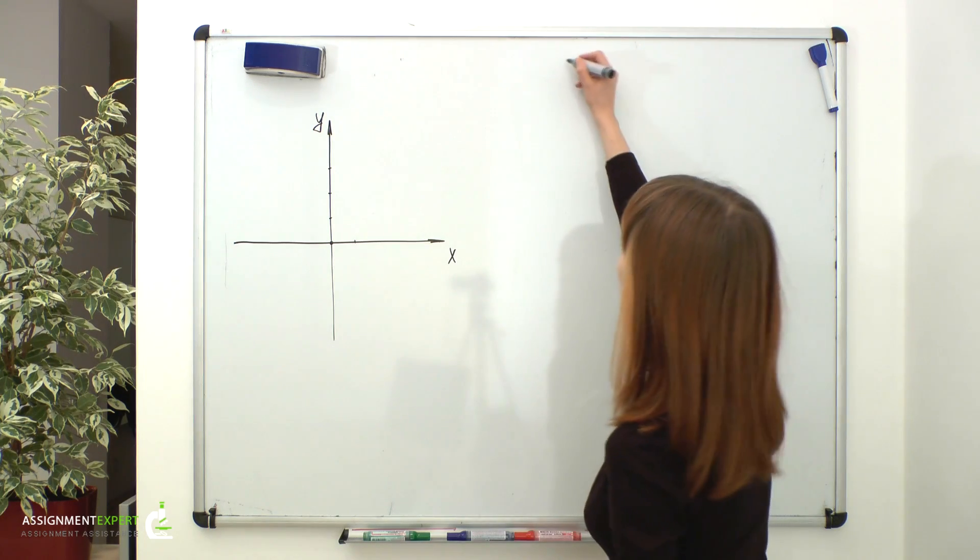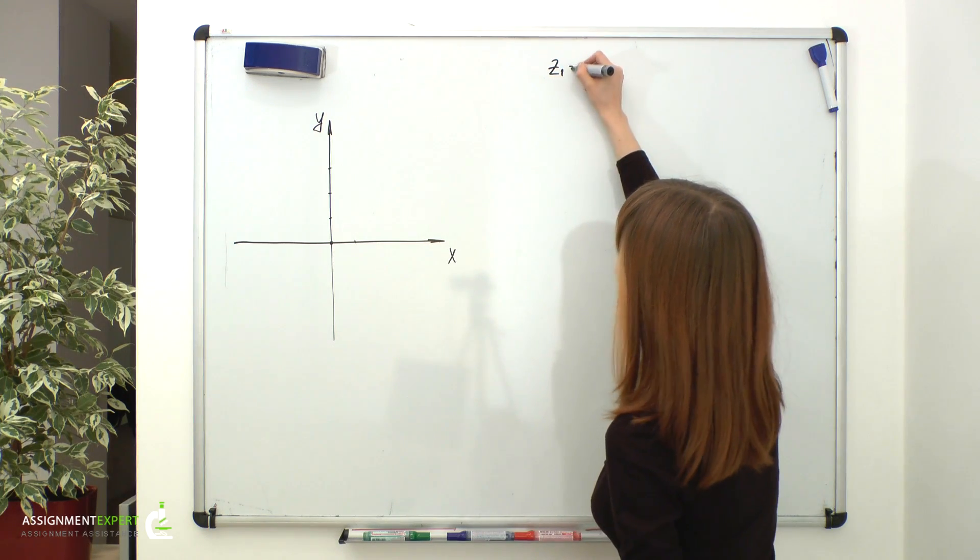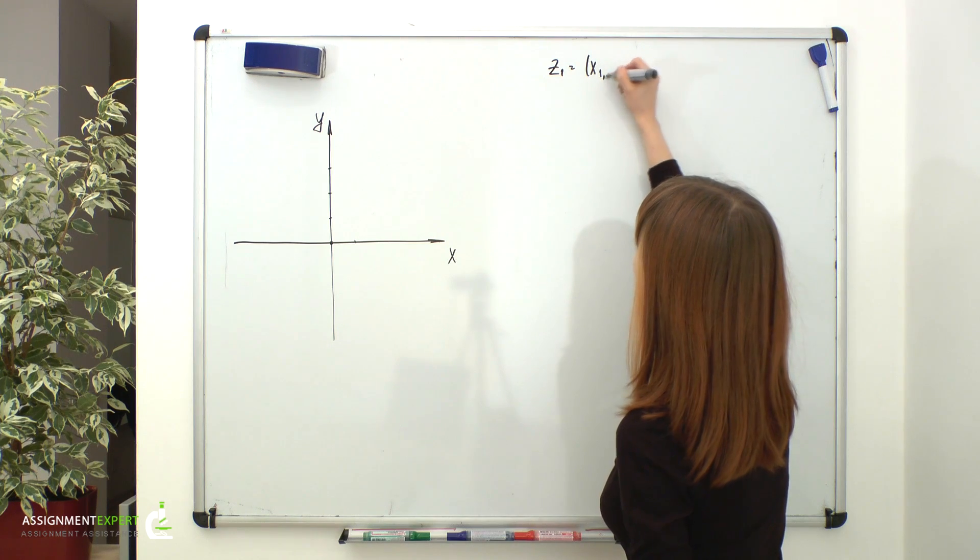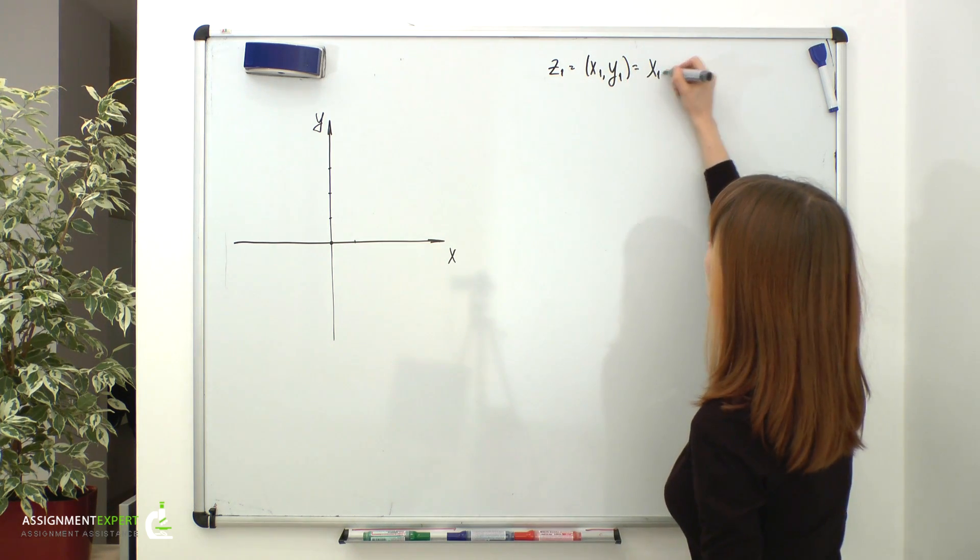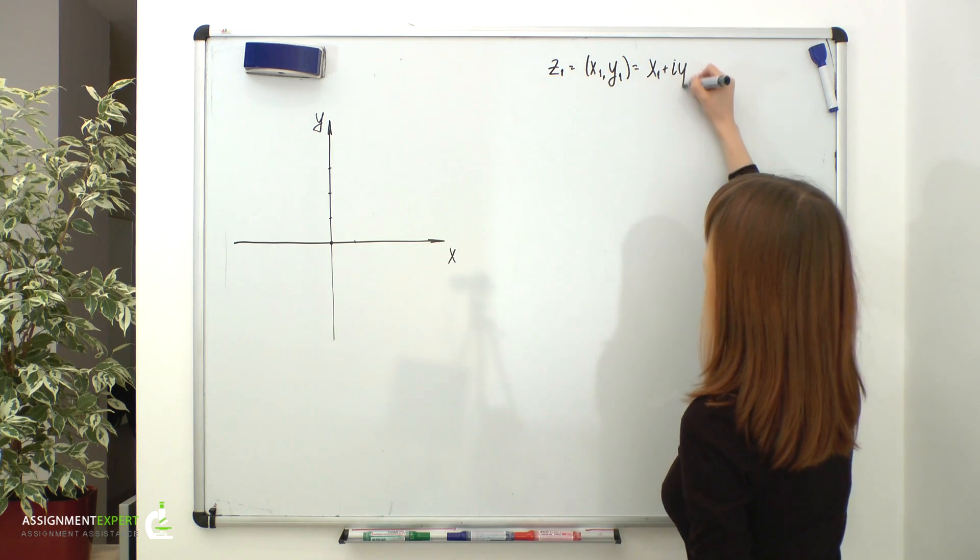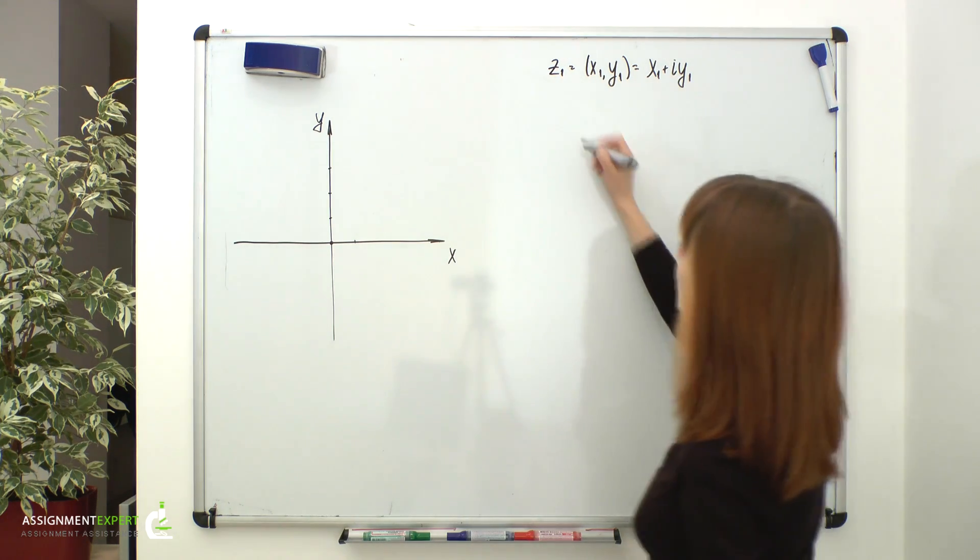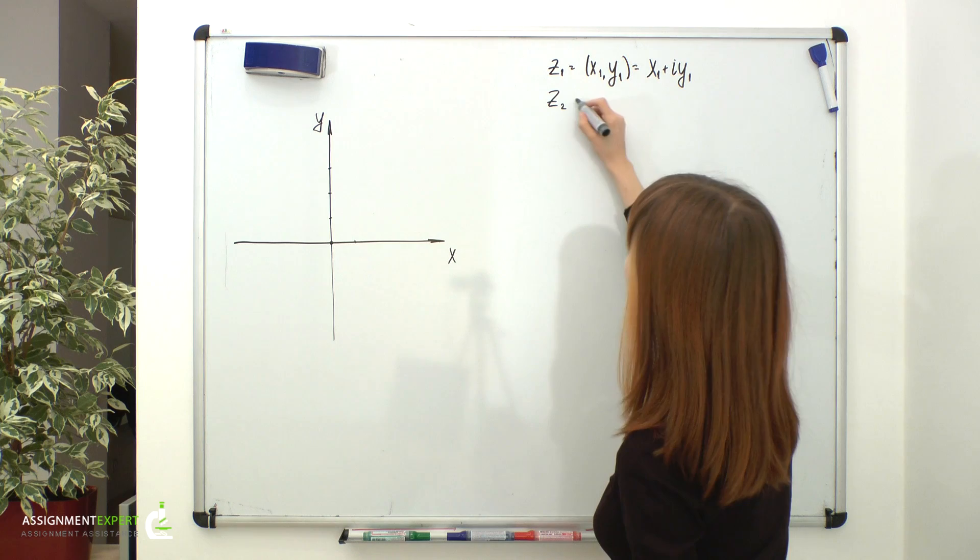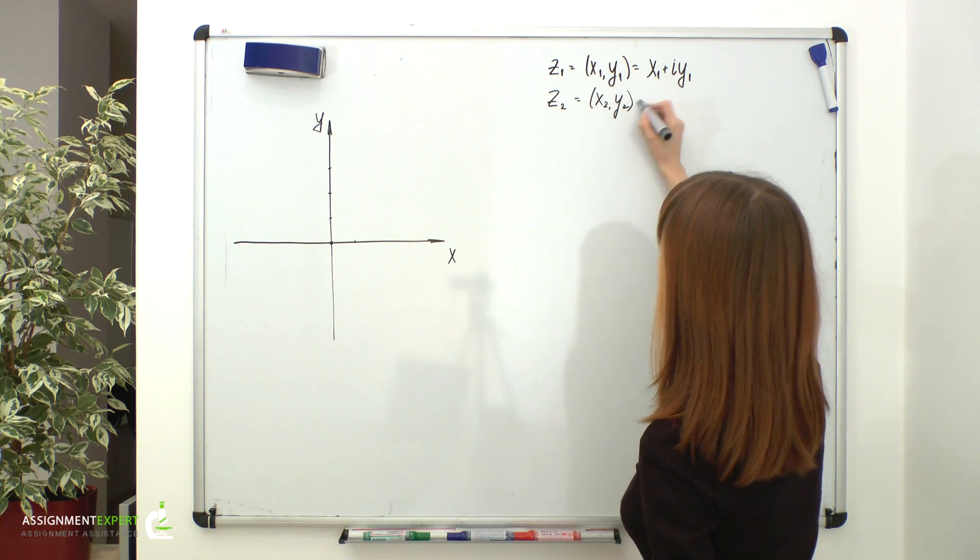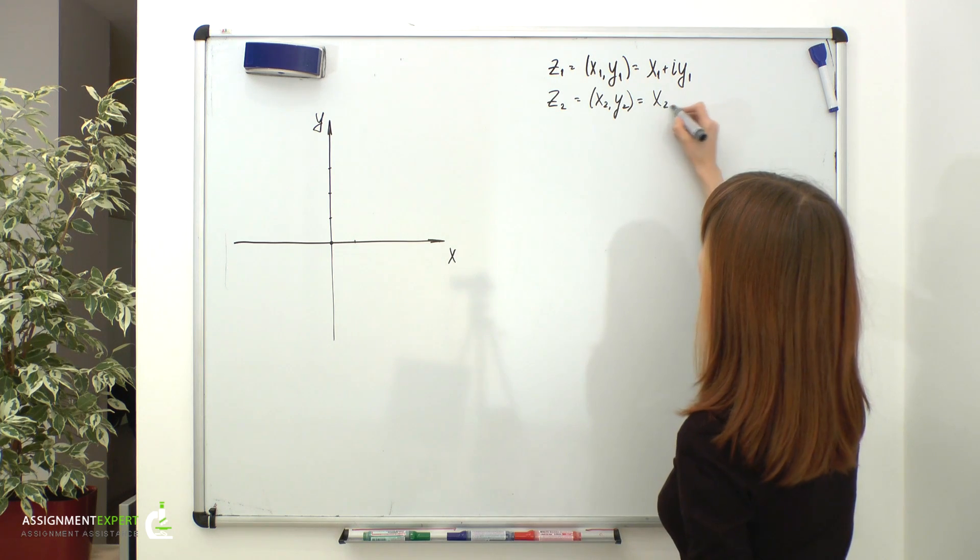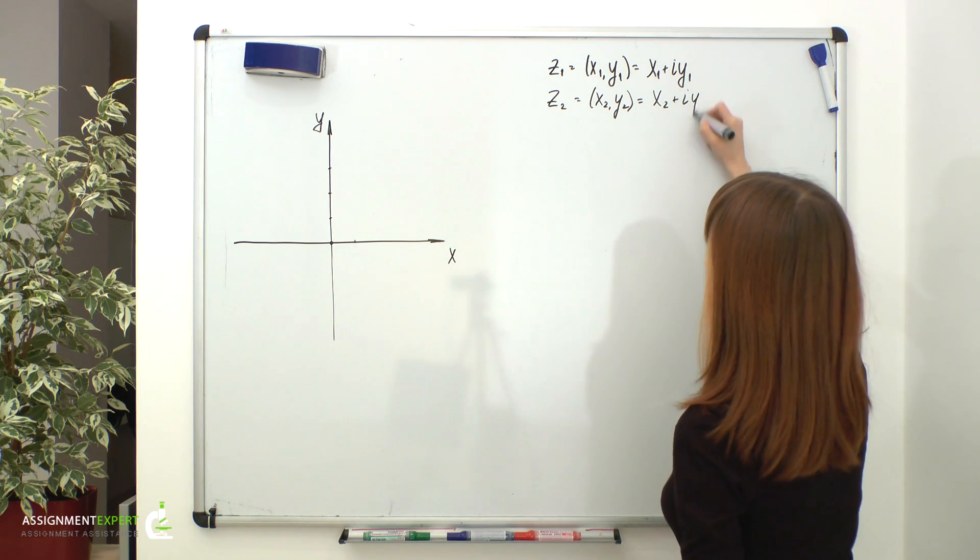Suppose we have a complex number z1 with coordinates x1 and y1, or in algebraic form x1 plus i y1, and complex number z2 with coordinates x2 and y2, or in algebraic form x2 plus i y2.